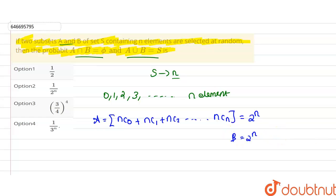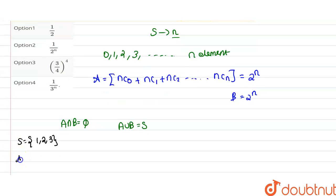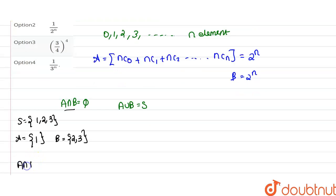Given that A intersection B equals phi and A union B equals S. Let's see an example: S = {1, 2, 3}, A = {1}, and B = {2, 3}. There is no intersection between A and B, so A intersection B equals phi. And A union B equals {1, 2, 3}, which is the same as S.